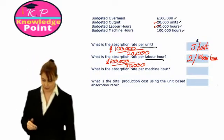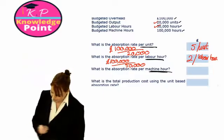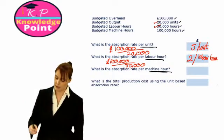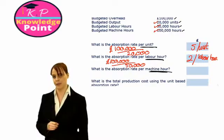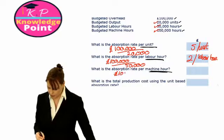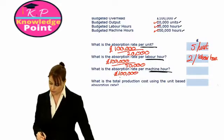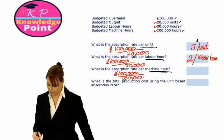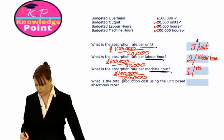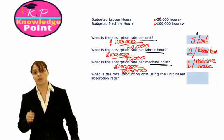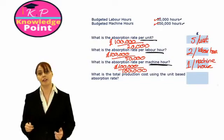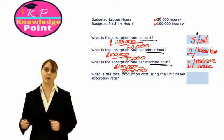The other approach is to calculate our overhead absorption rate based on machine hours. Our OAR is our budgeted costs of £100,000 divided by our budgeted machine hour activity — a very simple calculation — giving us £1 per machine hour. So for this company there are three different overhead absorption rates they could use. Does it make a difference which one they choose?